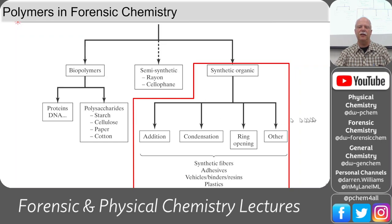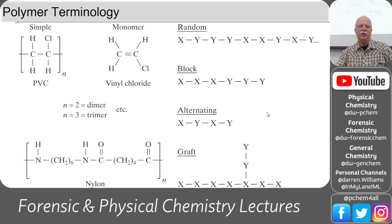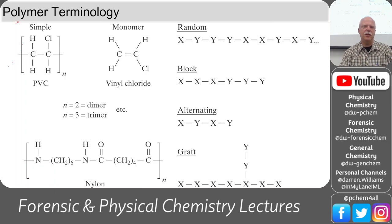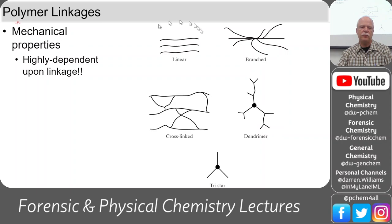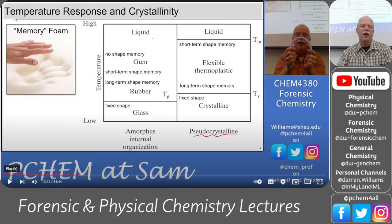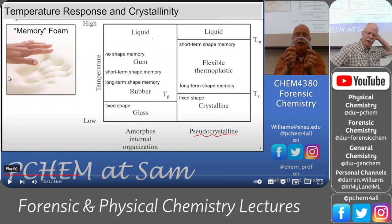Let's look at the different kinds of synthetic organic polymers. Going back to polymer terminology, all of these synthetic polymers are going to have some sort of double bond that will be the locus of polymerization. We talked about the difference between random, block, and alternating polymers, and grafting. The mechanical properties are dependent upon how the polymers are fused together or stacked. We also talked about temperature response and crystallinity.